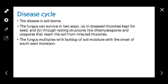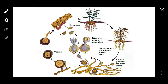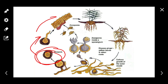Coming to the disease cycle: the pathogen survives through the soil and crop debris. In the next season, the spores germinate and infect plant tissue, with infection starting at the collar region.